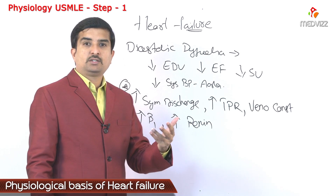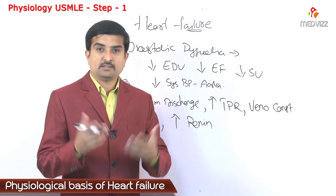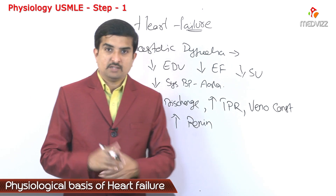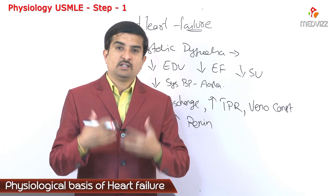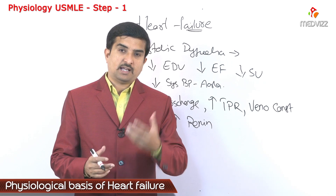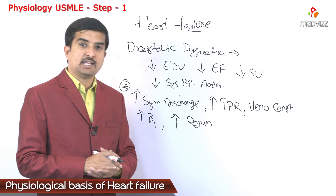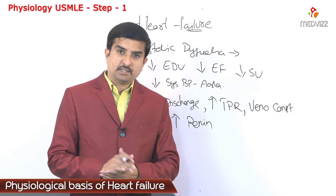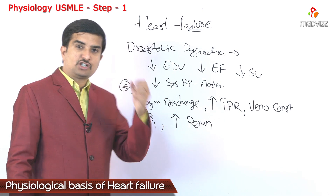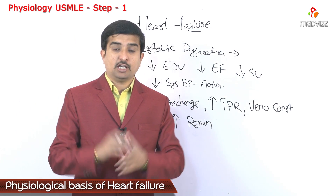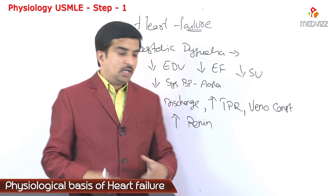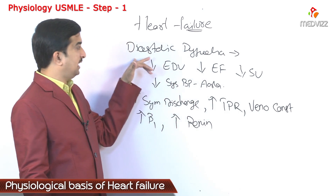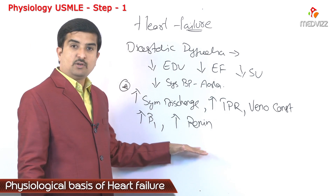With increased renin, there is an increase in aldosterone, which is responsible for sodium and water retention. Sodium and water retention leads to an increase in blood volume and venous return, and there would be an increase in heart rate and cardiac output. The sympathetic mechanism provides short-term compensation, while the renin-angiotensin-aldosterone mechanism is always long-term. When the renin-angiotensin mechanism plays a role in compensating diastolic dysfunction, there would be increased aldosterone production.